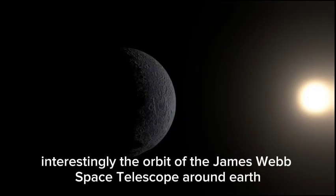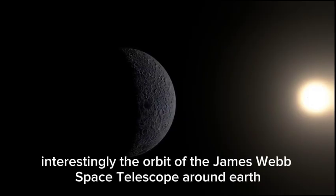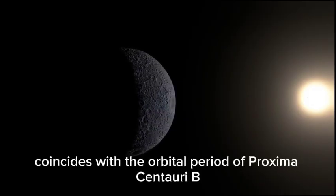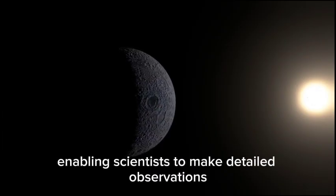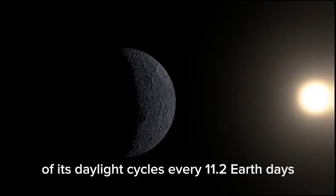Interestingly, the orbit of the James Webb Space Telescope around Earth coincides with the orbital period of Proxima Centauri b, enabling scientists to make detailed observations of its daylight cycles every 11.2 Earth days.